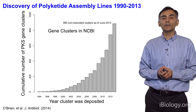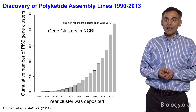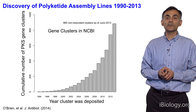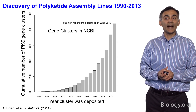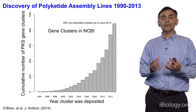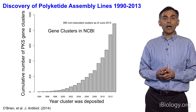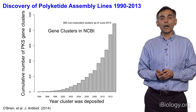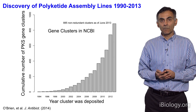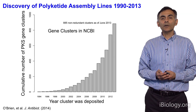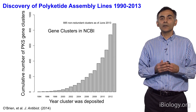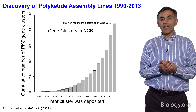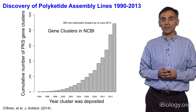Something happened around the mid-2000s. As most of you recognize, that's around the time it became relatively easy to sequence genomes, in particular bacterial genomes. Since then, the field has exploded in terms of the number of assembly lines known to us through sequence identity. As of last summer, there were close to 1,000 distinct polyketide assembly lines that had been cloned and sequenced and deposited in the database.